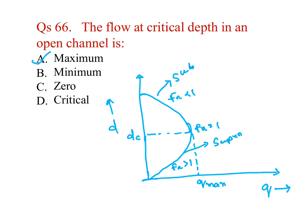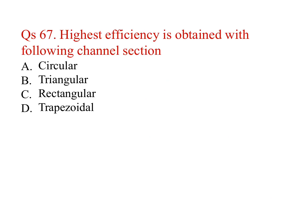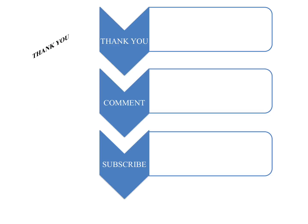At critical depth in an open channel, flow is maximum — Q max. Highest efficiency is obtained with the trapezoidal channel section. Circular, triangular, and rectangular sections are not the answer — trapezoidal section gives highest efficiency. Thank you.